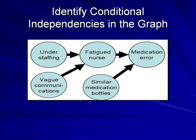Figure 4 shows four proposed causes for medication error: understaffing, fatigue nurse, vague communication, and similar medication bottles. Two root causes — understaffing and vague communications — are shown to precede the direct cause, fatigue nurse. Removing the node fatigue nurse would stop the flow from these two root causes to the medication errors; therefore, a conditional independence is assumed. This assumption can be verified either through data or through expert judgments. If we know that the nurse is fatigued, understaffing adds no additional information to the probability of medication error, so this independence is verified.